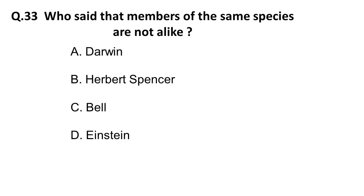The next question: who said that members of the same species are not alike? Options are A) Darwin, B) Herbert Spencer, C) Bell, D) Einstein. If you recall Darwin's theory of evolution, it mentions that members of the same species are not alike. The correct answer is Darwin.